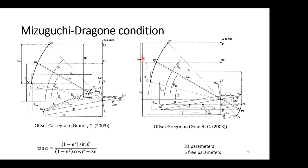You can see there's a lot of parameters here, different angles, different lengths. There are 21 geometric parameters in total, defined by Grenet in his 2003 paper.